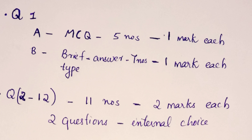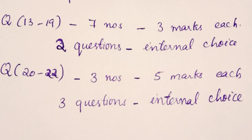These 11 questions from 2 to 12 are short answer type — basically conceptual level, and you can also expect some basic numericals from this section. From question number 13 to question number 19 there are 7 questions carrying 3 marks each. You will have internal choices for any 2 questions from the 2-mark section and also from the 3-mark section. The last remaining questions, 20 to 22, are for 5 marks each, and all 3 of these questions will have internal choices.